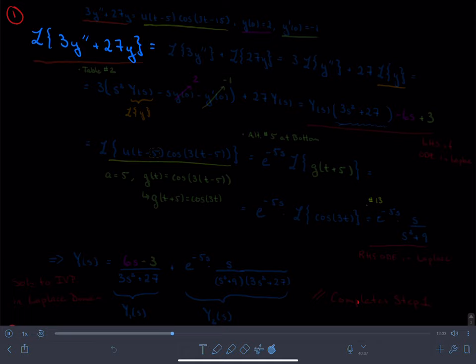But let's first remember that the ordinary differential equation was 3y double prime plus 27y is equal to u(t-5) times the cosine of 3(t-15), subject to the initial condition y(0) is equal to 2, and then y prime of 0 is equal to negative 1.